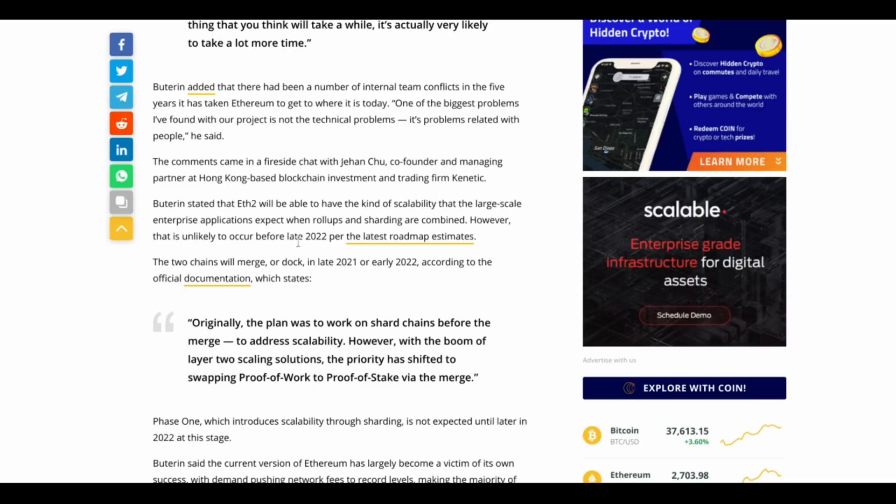However, that is unlikely to occur before late 2022 per the latest roadmap estimates. The two chains, so the Beacon Chain and the actual mainnet that the smart contracts are running on, will merge. And in Ethereum systems, they call that the docking. In late 2021 or early 2022, whenever a crypto project says late anything or early anything, I usually assume best case scenario, it's going to be the early, but probably more like the mid part of the early. So this could happen in early 2022 or maybe even mid 2022.